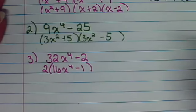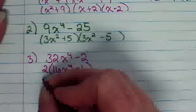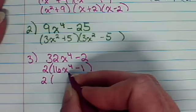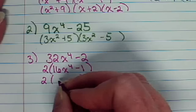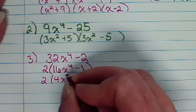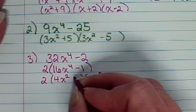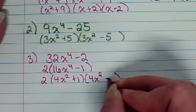Now, I have the difference of squares. The 2 still remains on the outside. To get to 16x to the fourth, I'm going to have 4x squared and 4x squared. This is going to have to be 1 and negative 1.